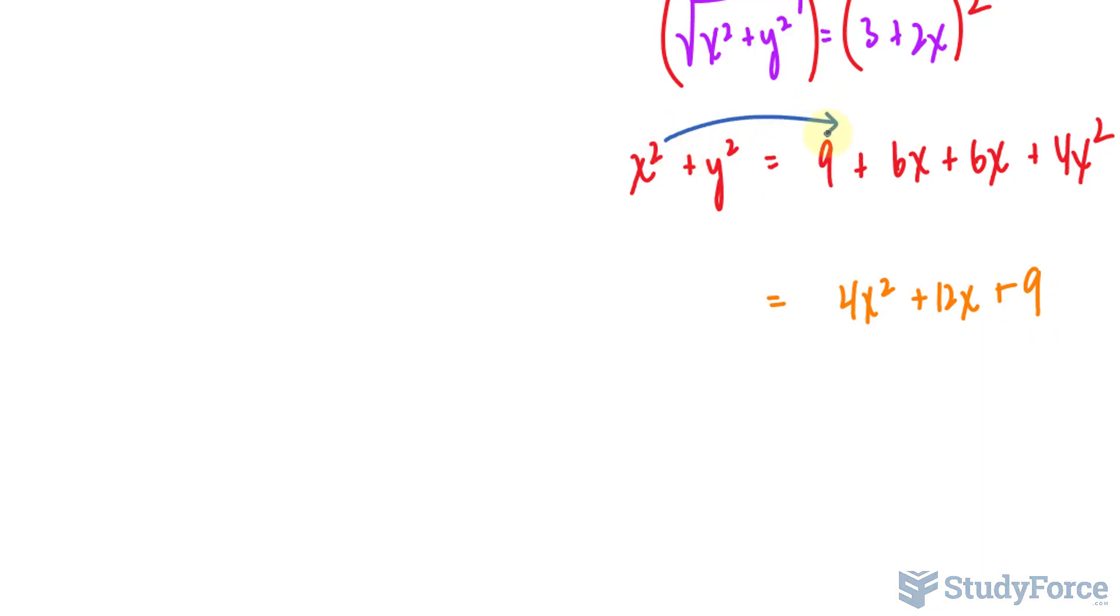And pretend that we brought that over, that x squared, so we have minus x squared, which we get 3x squared plus 12x plus 9 on the left side.